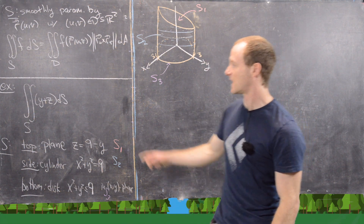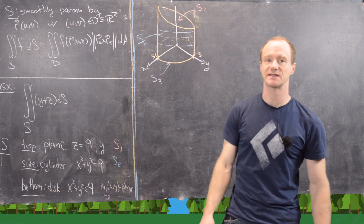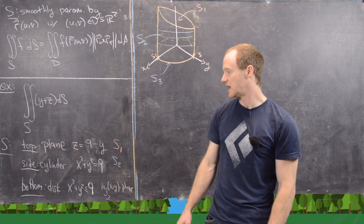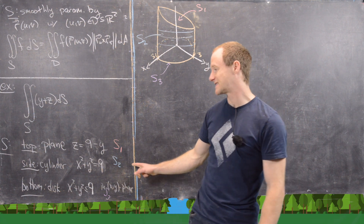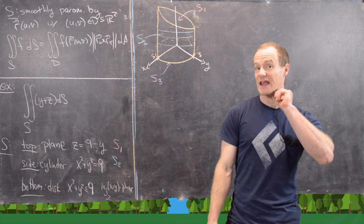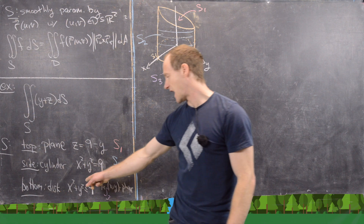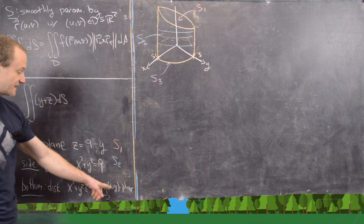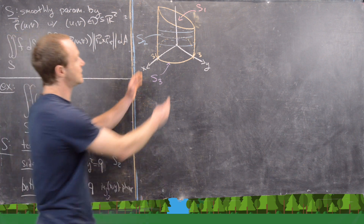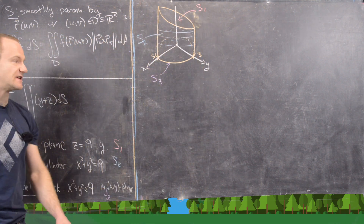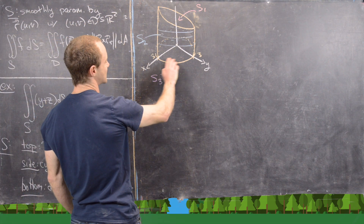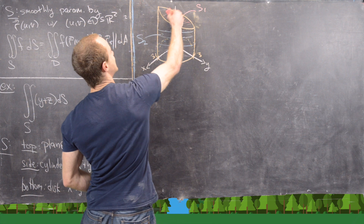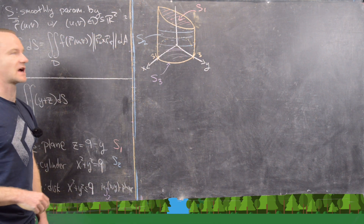The goal is to find the surface integral of y + z over a surface described with three parts. The top is the plane z = 9 − y, called S1. The side is the cylinder x² + y² = 9, called S2. The bottom is the disk x² + y² ≤ 9, called S3, which is in the xy-plane. The cylinder is capped on the bottom by the disk S3 and on the top by the slanted plane S1, which looks like an ellipse on top.